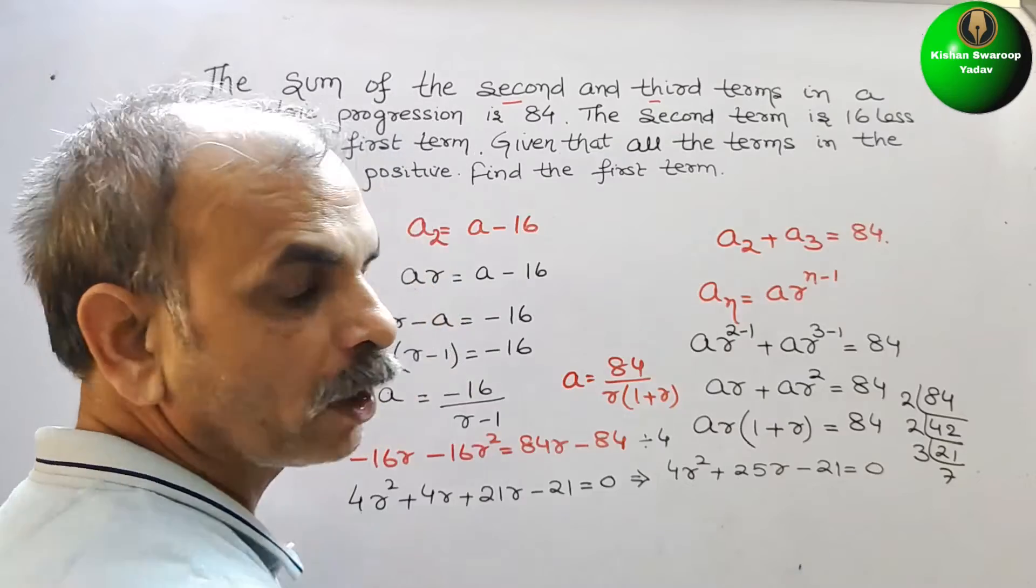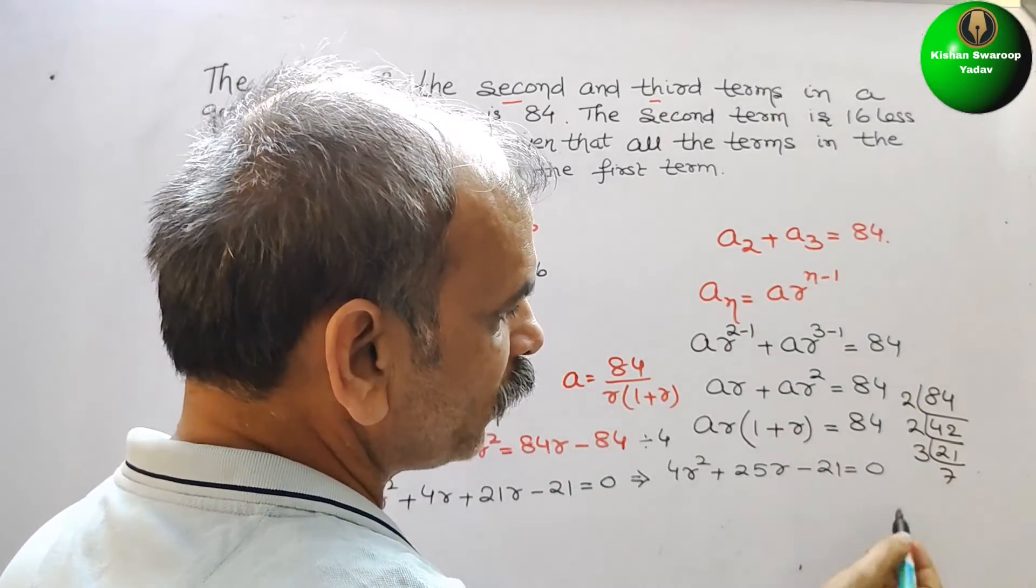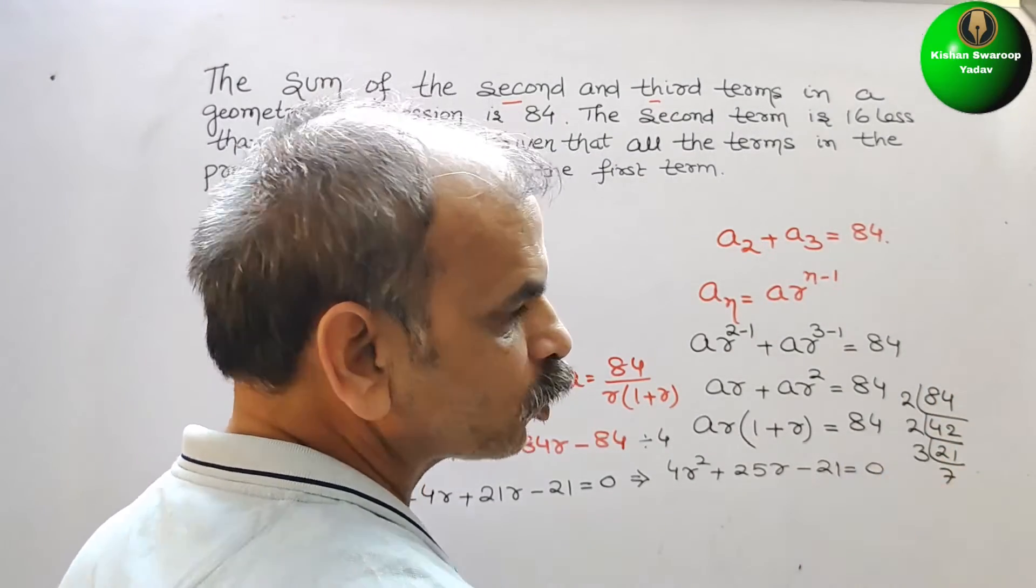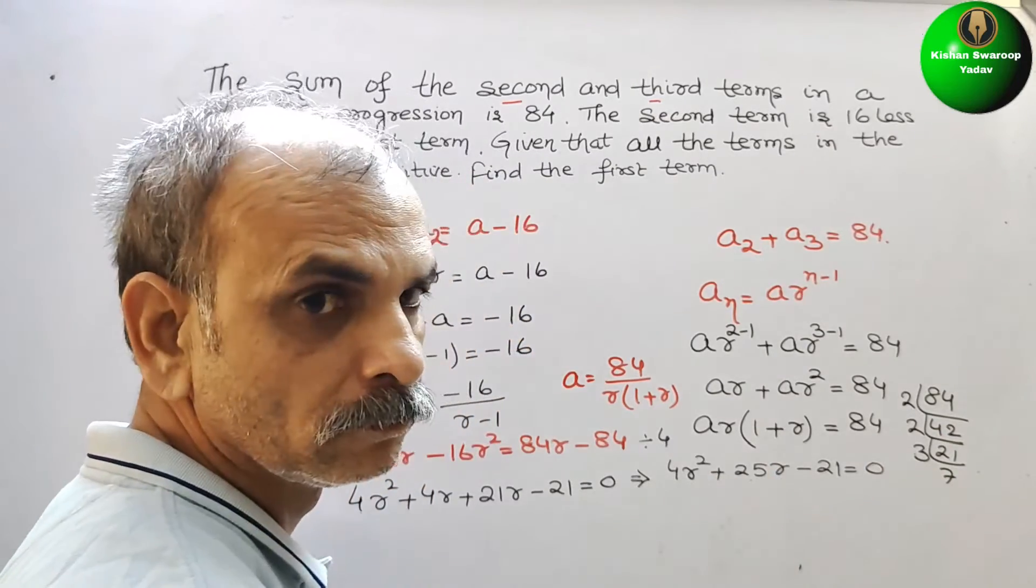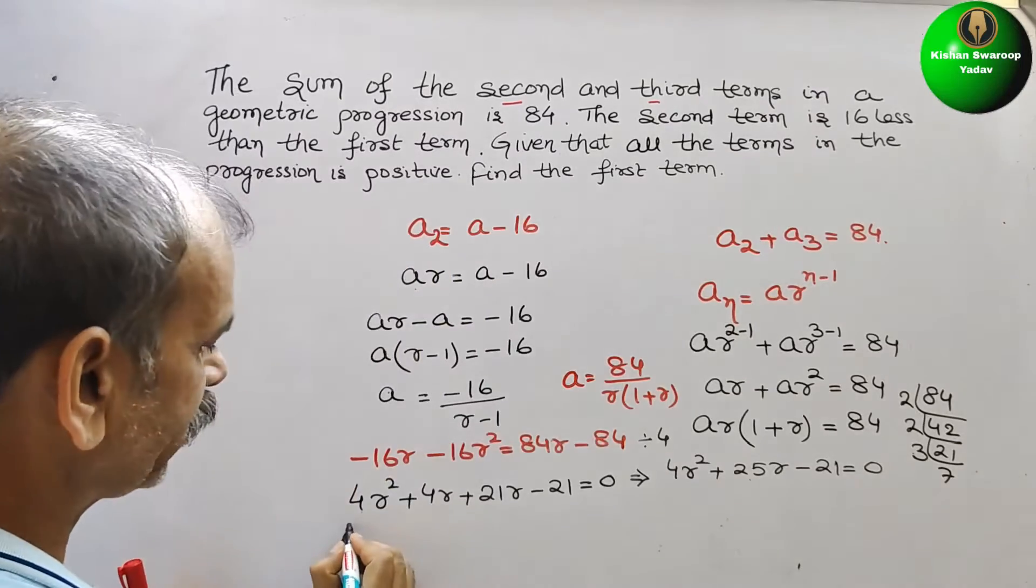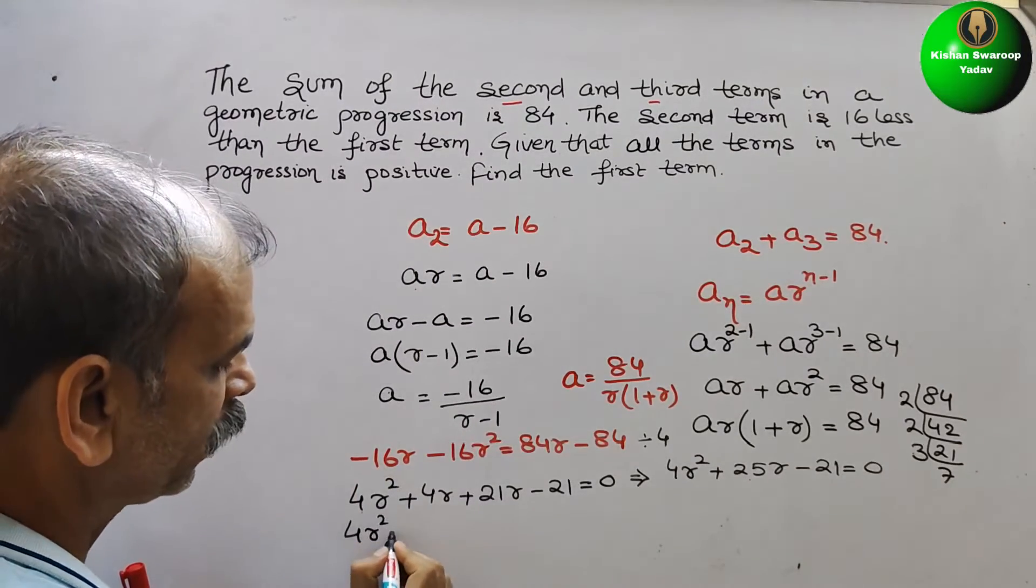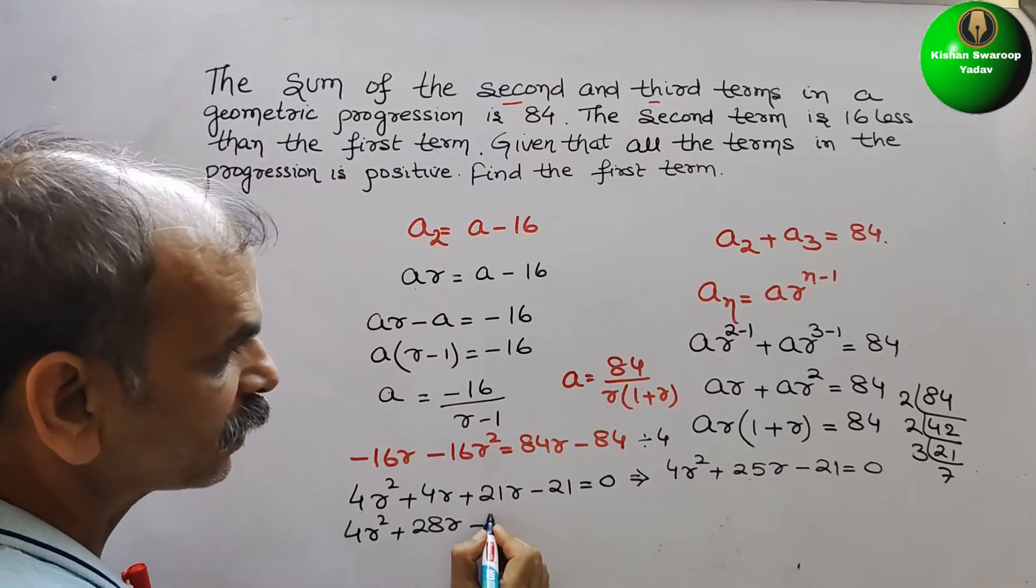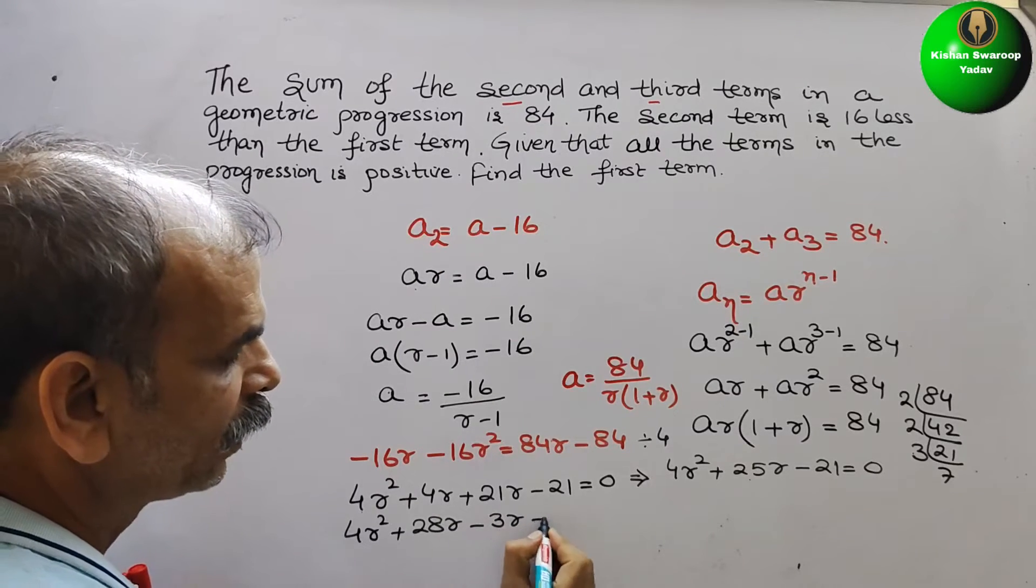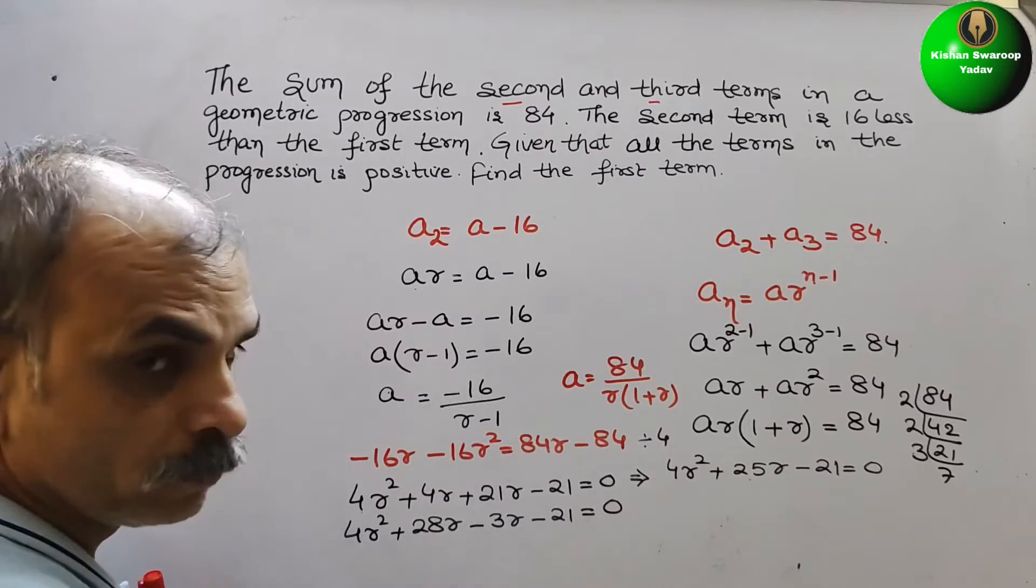So we have to make 25 of this. So we can see 7 into 4 is 28. 28 minus 3 is 25. So therefore, we will rewrite it as 4r square plus 28r minus 3r minus 21 is equal to 0.